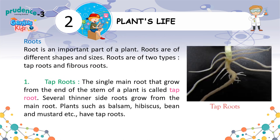Roots. Root is an important part of a plant. Roots are of different shapes and sizes. Roots are of two types: tap roots and fibrous roots. Tap roots — the single main root that grows from the end of the stem of a plant is called tap root. Several thinner side roots grow from the main root. Plants such as balsam, hibiscus, bean and mustard have tap roots.